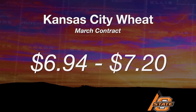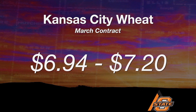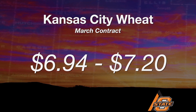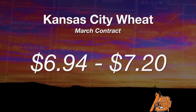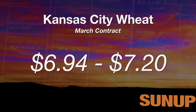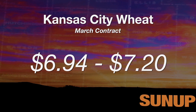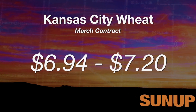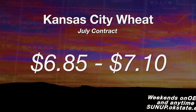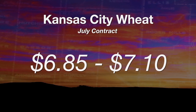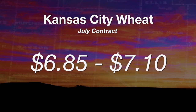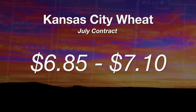Watching the wheat market: the Kansas City Board of Trade March contract is trading between $6.94 and $7.20. If it breaks $6.94 on the way down, then we've got another $0.30 below that. If it goes above $7.20, the next target is $7.40. The basis is holding strong — that's good news, and I think it will continue to do so. If you're watching the July contract, $6.85 to $7.10 is the range right now. Above $7.10 it goes to $7.27. If it breaks $6.85, then it's $0.30 down.